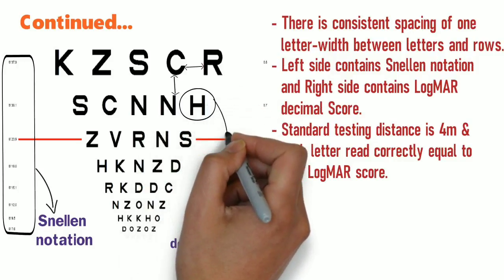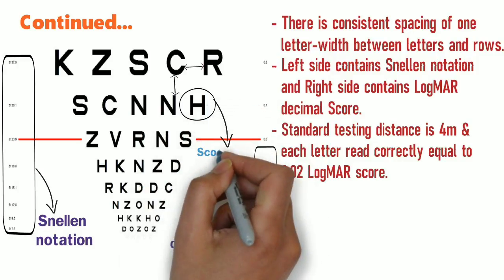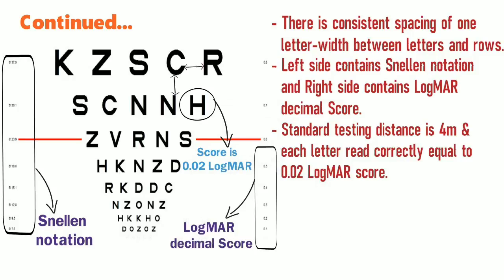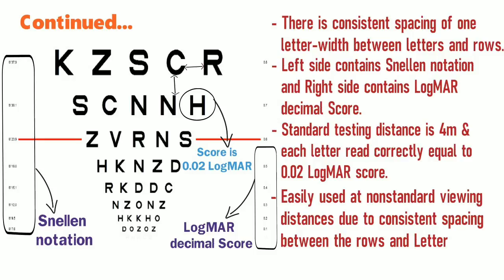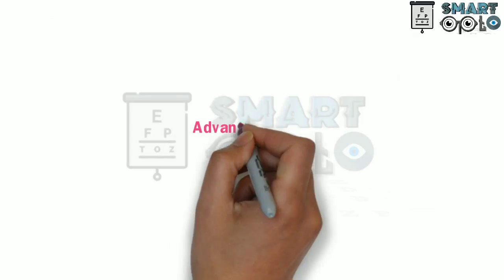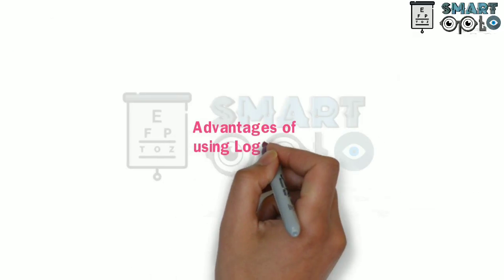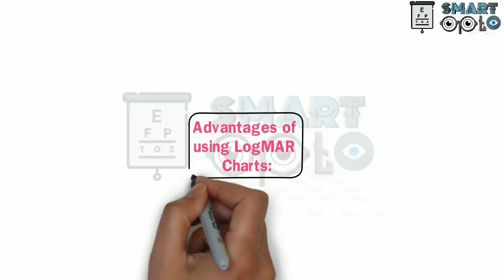The standard testing distance of the chart is four meters, and each letter read correctly equals 0.02 LogMAR score. The LogMAR visual acuity charts can be easily used at non-standard viewing distances due to consistent spacing between the rows and the letters.